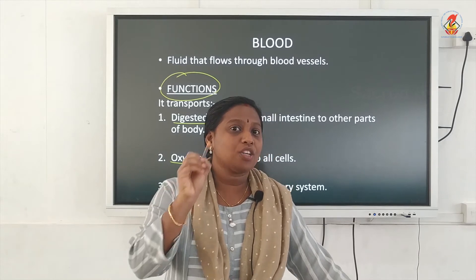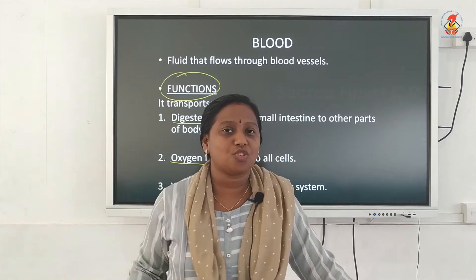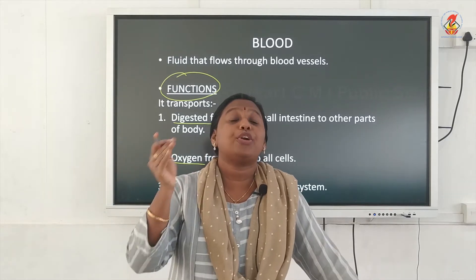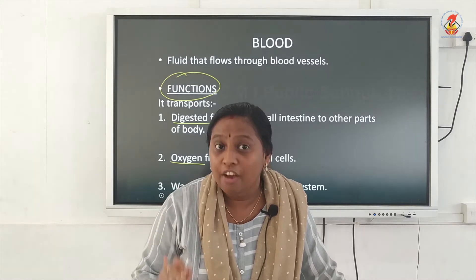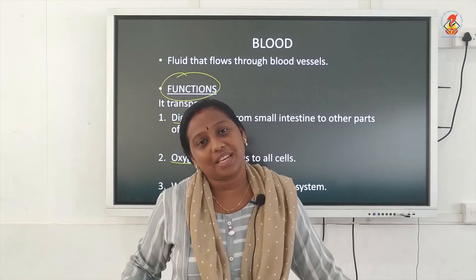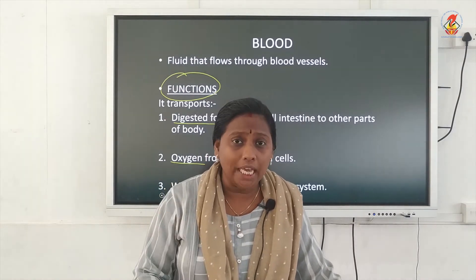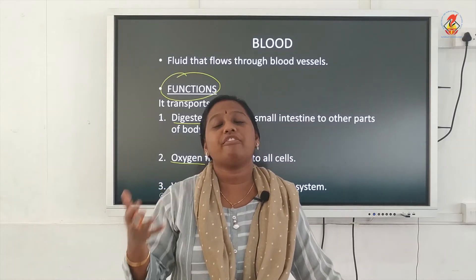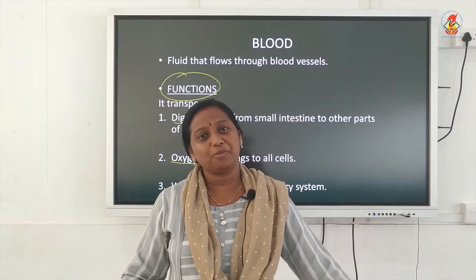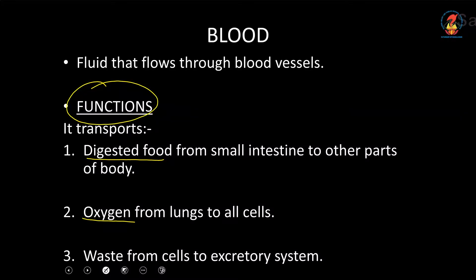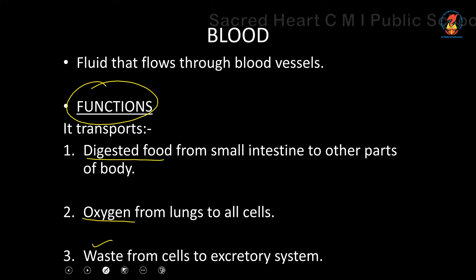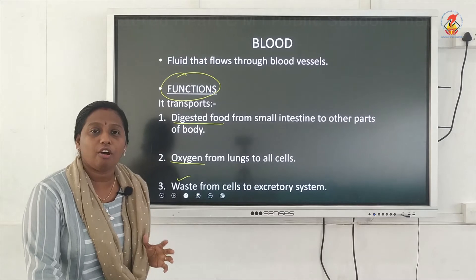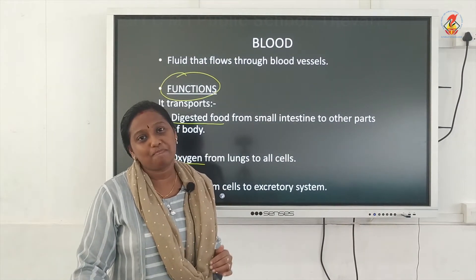Why do your cells require oxygen? Because blood has given all the nutrients to the cell, and the cell has to produce energy with these nutrients — and for the production of energy, oxygen is very essential. So the blood transports digested food and oxygen to every cell of our body. After the production of energy in the cell, waste materials are produced. These waste materials are removed from the cells again by the blood. So the removal of waste from every cell is also a function of blood. These are the three functions of our circulatory fluid, blood.